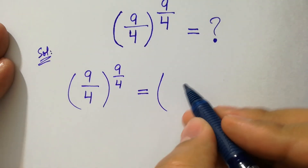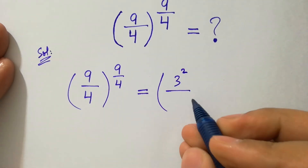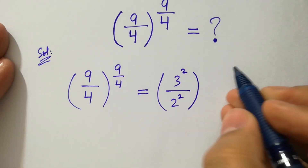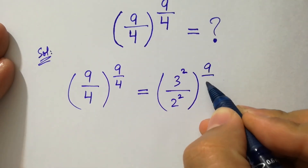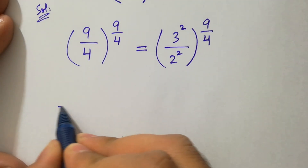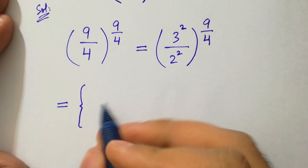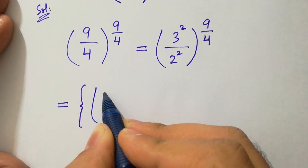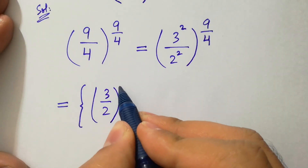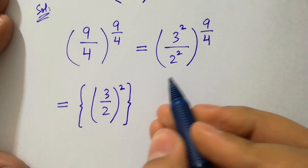Here 9 is the same as 3 squared, and 4 is the same as 2 squared, to the whole power 9 over 4. It can be written as bracket 3 over 2 to the power 2, to the whole power 9 over 4.